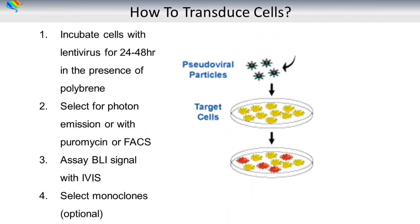How to transduce cells? It is easy to transduce your cells. You incubate the cells with the lentivirus for 24 to 48 hours in the presence of polybrene. Next, you select for photon emission with puromycin or FACS. You can assay the bioluminescent signal with the IVIS. In the last step, one can select monoclones for stable cell line generation.